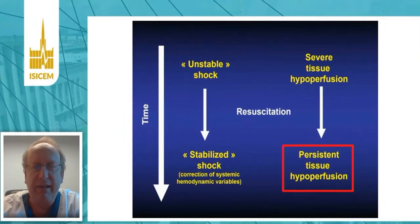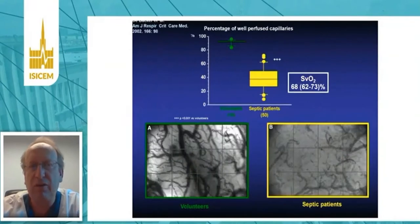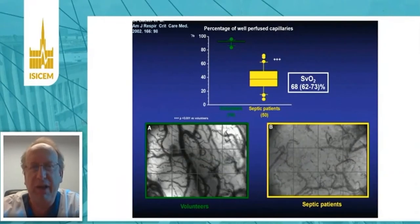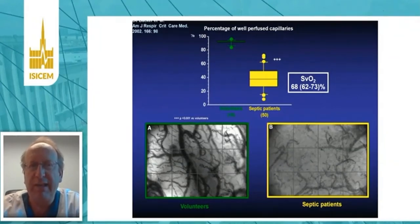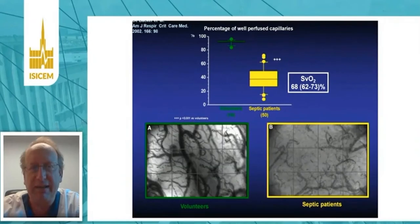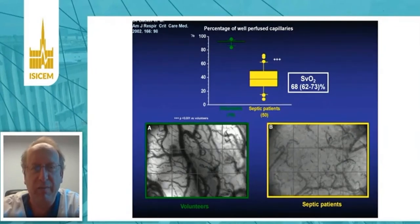It has been well demonstrated 20 years ago by Daniel DeBacker. He was able to show that in patients with sepsis and septic shock, the great majority present a decrease in the percentage of well-perfused capillaries after stabilization of their hemodynamic status. The SVO2 was around 70%, and despite correction of systemic hemodynamic variables, there was profound tissue hypoperfusion in those patients.